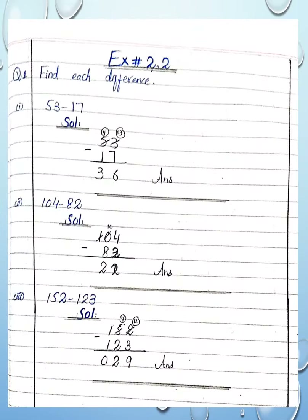Now let's start Exercise 2.2, Question 1: find the difference. Difference means subtraction. What you do is subtract the smaller number from the bigger number. For example: 53 minus 17. Here 3 is the smaller digit and 7 is greater, so we cannot subtract 7 from 3. So we borrow from the next number.